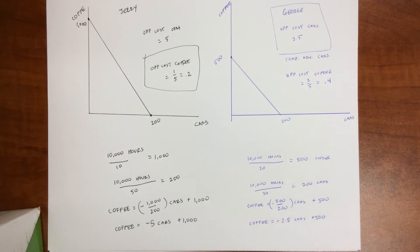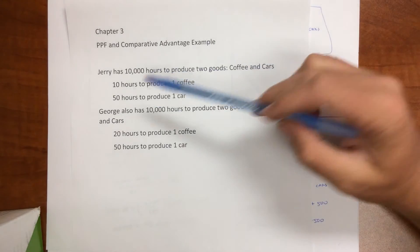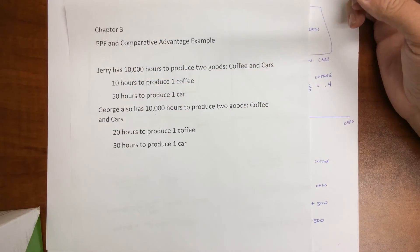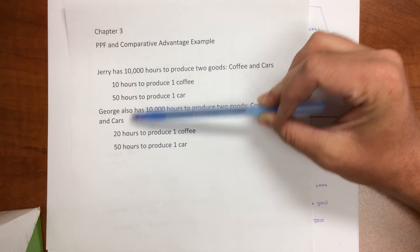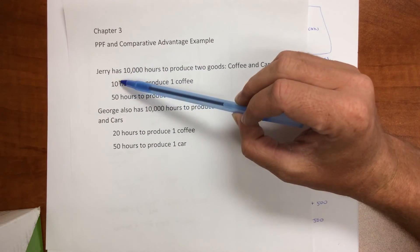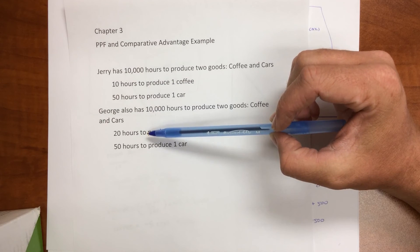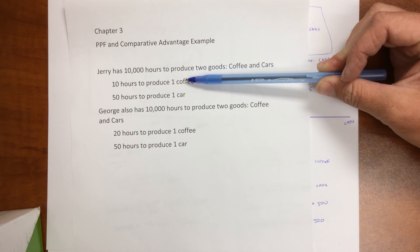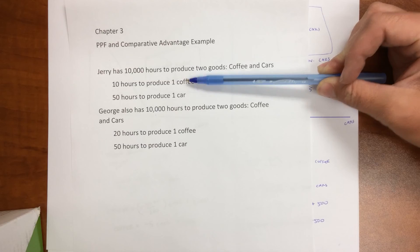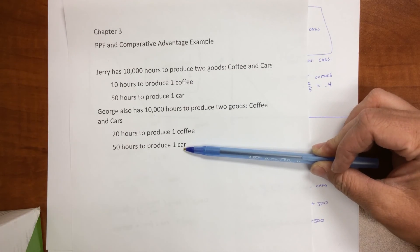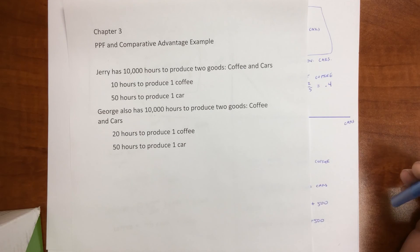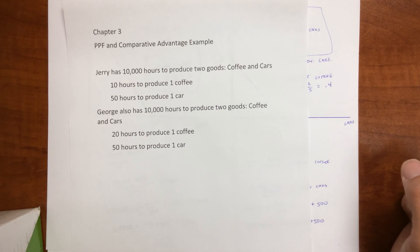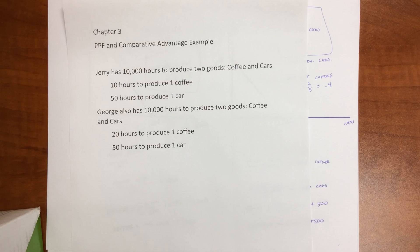The other way to look at it is to go back to our original example. They both have the same number of hours, so this might be an easy way to look at it. Who's better at producing cars? Well, they're both equally as efficient in producing cars. It takes them both 50 hours. But Jerry is actually better at producing coffee than George because it requires him 10 hours to produce one cup and George requires twice as much. So Jerry would have the comparative advantage in coffee, leaving us with George having the comparative advantage in producing cars. Now, in terms of absolute advantage, Jerry has the absolute advantage in producing coffee and they have equal absolute advantage in producing cars. And so that's how we can use a PPF to look at who has a comparative advantage.